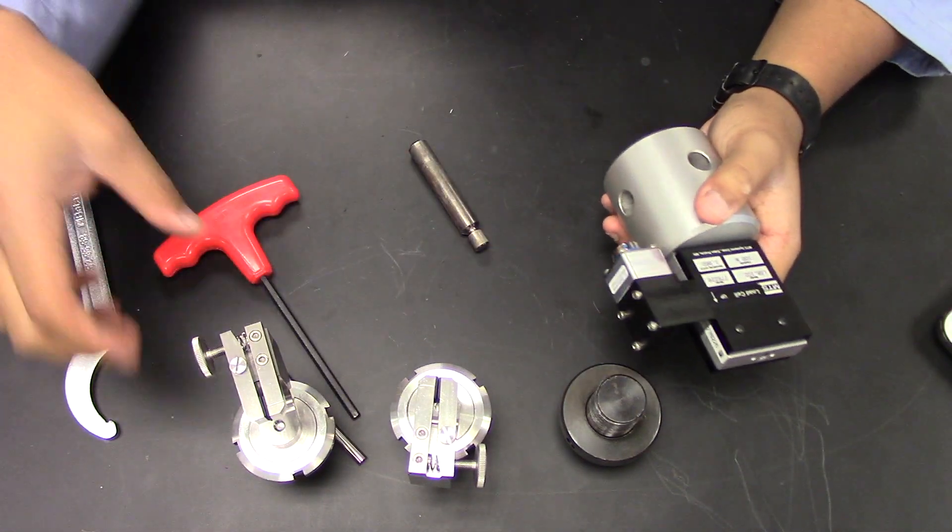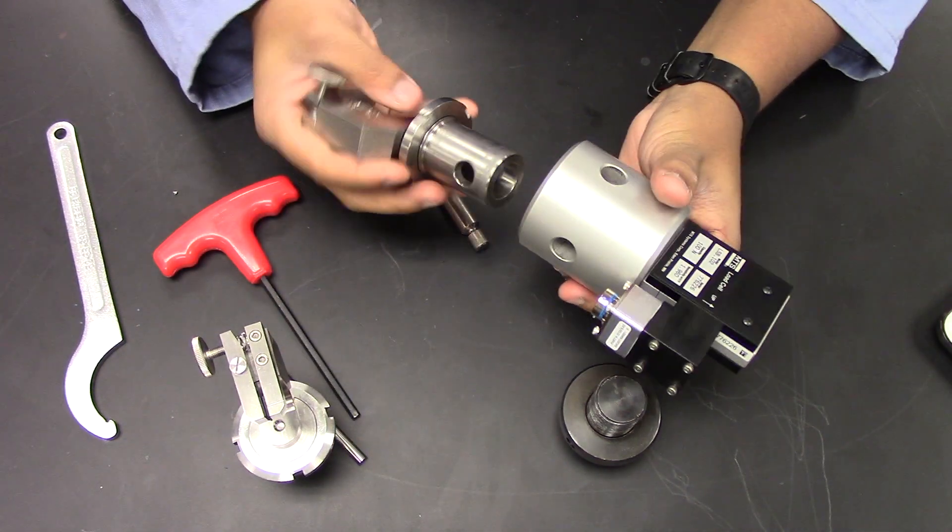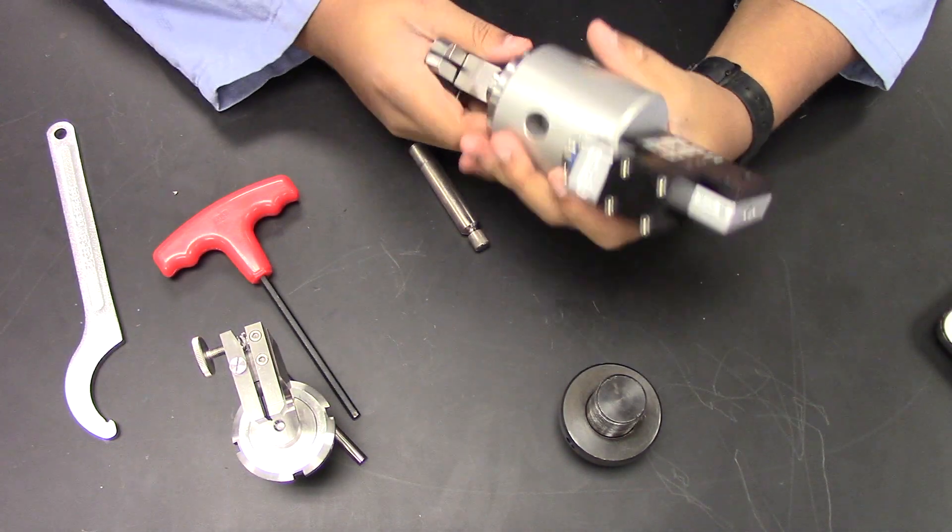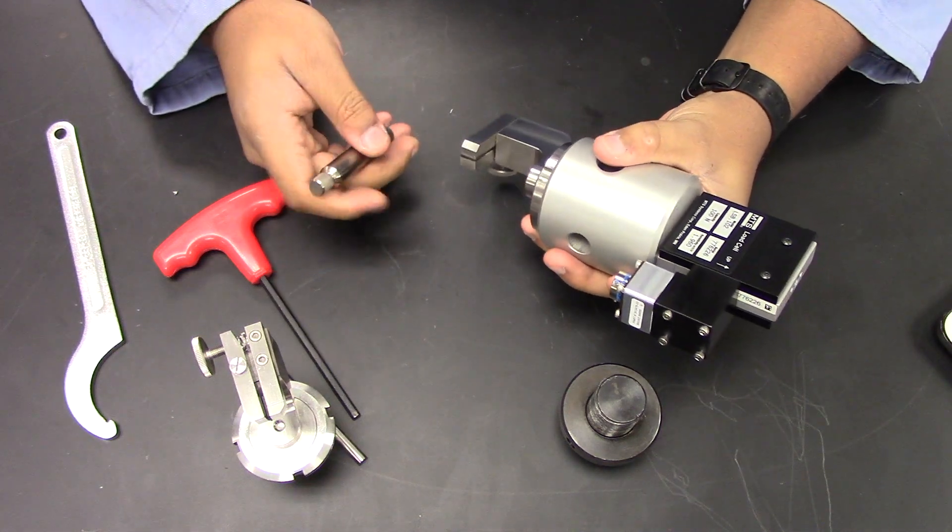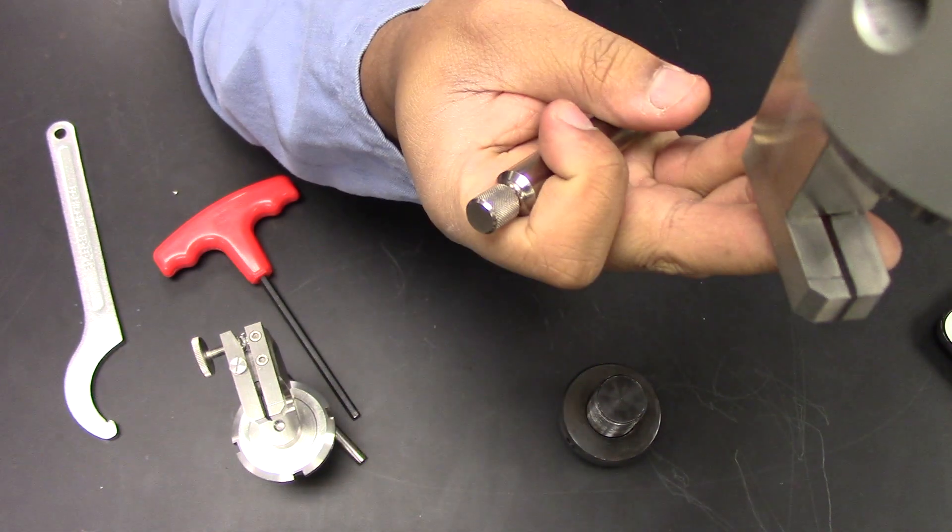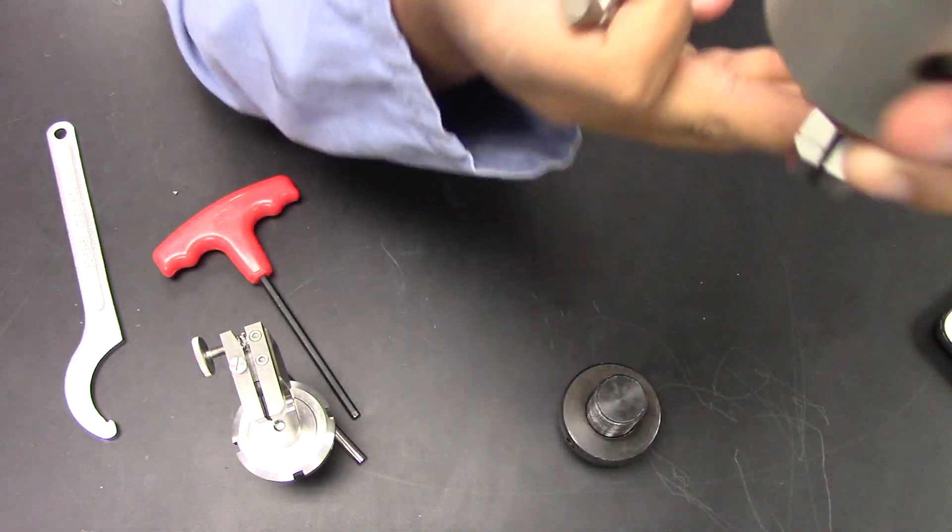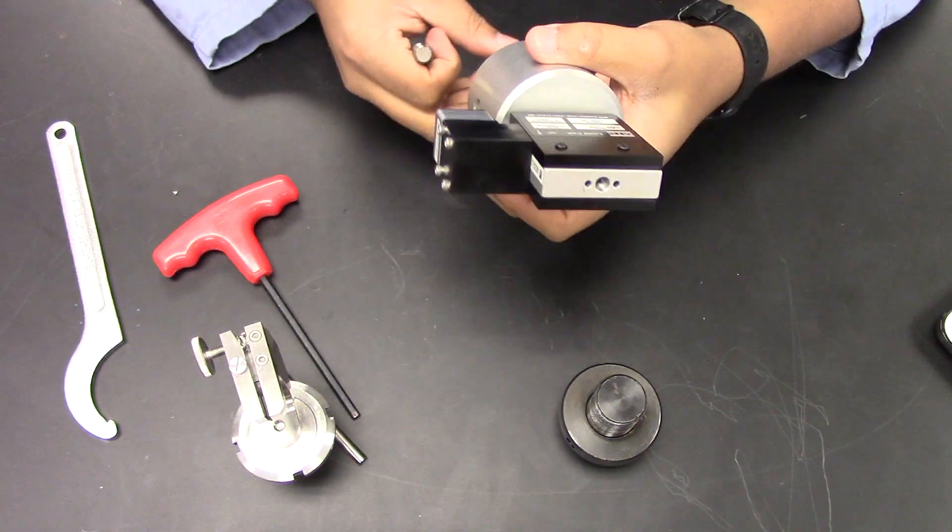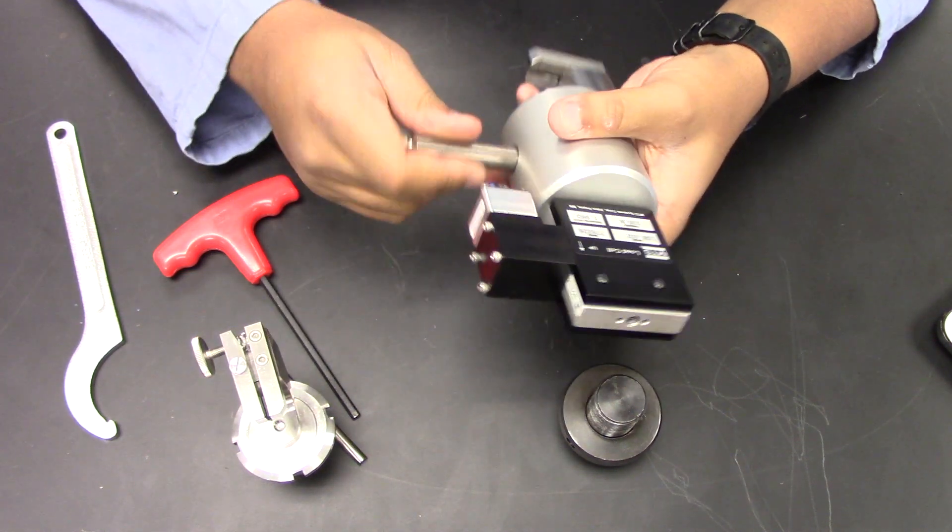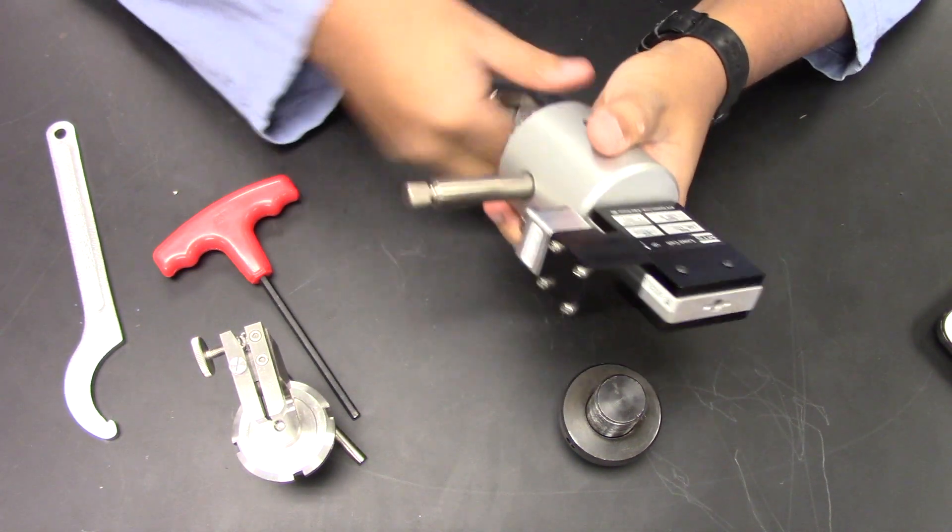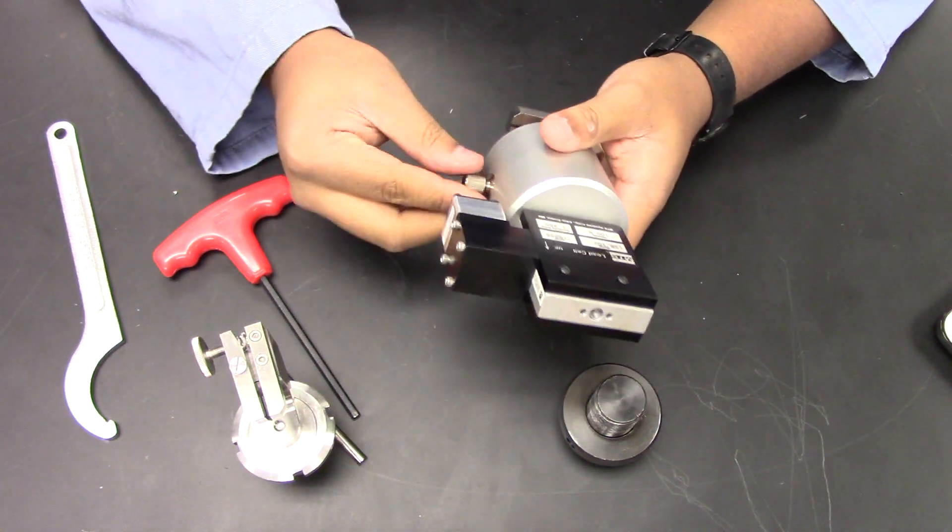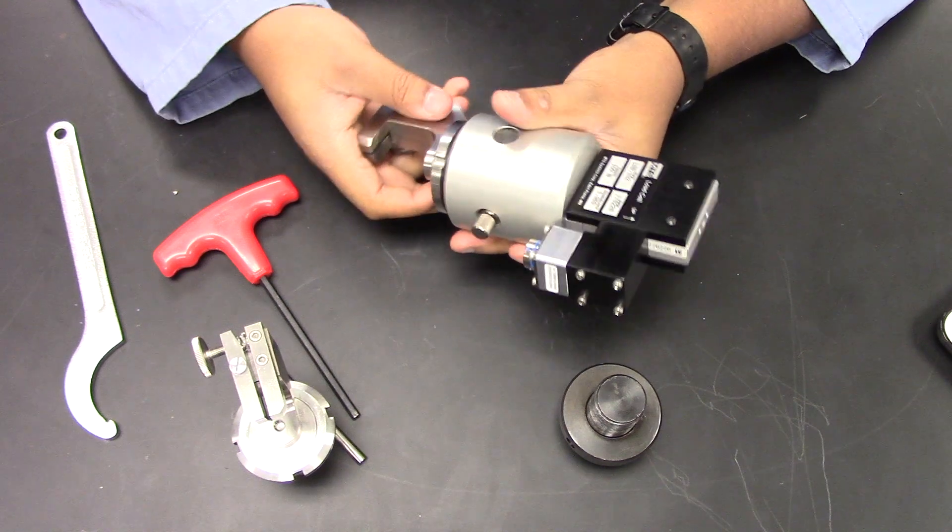Once that is secure, I'm going to insert my grip. Note that with this particular grip, I'm going to orientate it such that the right side, which you can see right here, has a line indicator. So make sure that that indicator is facing you. And then insert your pin. And now you've attached your grip to your load cell.